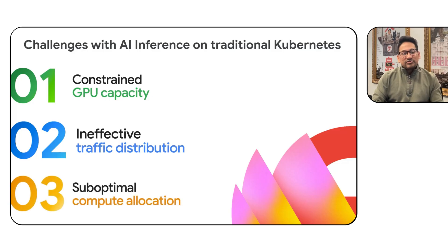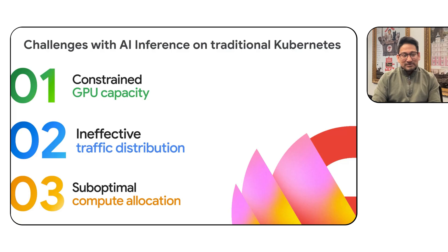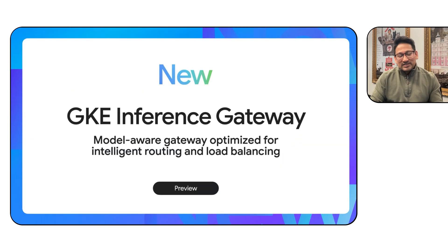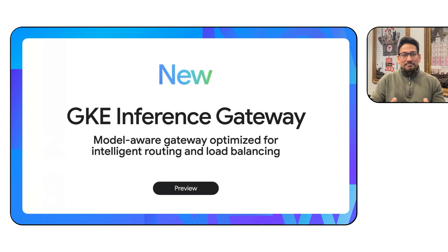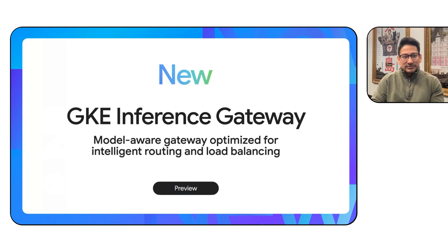And finally, the amount of compute to allocate for every single model is something customers really consider top of mind, given that GPUs and TPUs are expensive compared to traditional compute. We are solving all of these problems with novel enhancements in GKE with GKE Inference Gateway. GKE Inference Gateway is not a net new product — it is a significant enhancement over the existing GKE Gateway, and it is available in public preview today. You can go into your Google Cloud projects today and start using it.